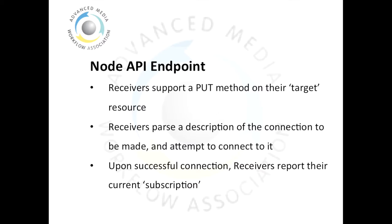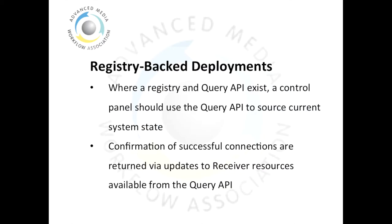The receiver can then use this to connect to the stream that is advertised. Upon successful connection to a stream, a receiver must report which sender it is currently subscribed to. This is done via the receiver resource in its node API. In a registry-backed discovery architecture, as discussed in the last screencast, the Query API can be used in order to source details about all of the senders and receivers in a system.